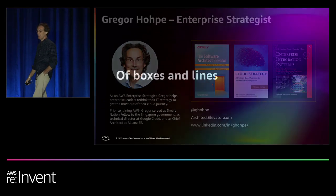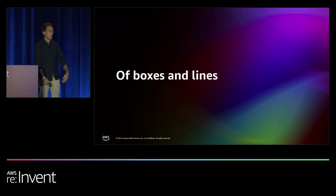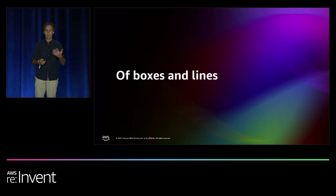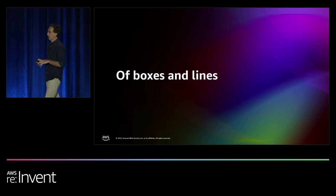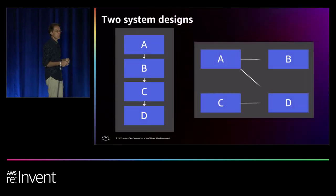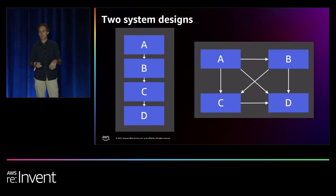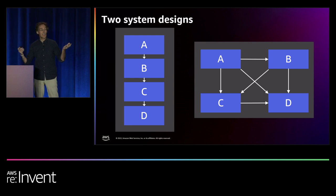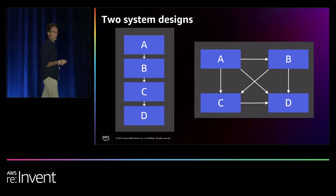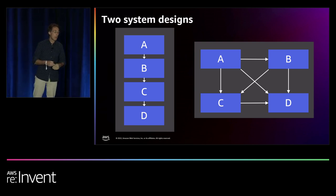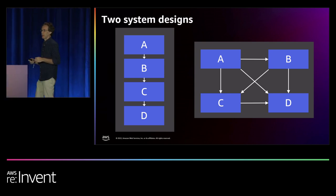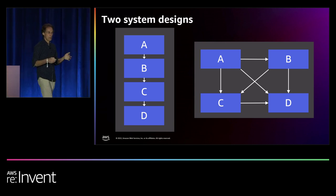I promised blue boxes, so let's look at some blue boxes and why integration — or the way we connect systems — is so important. There's a mandatory slide that all my re:Invent talks tend to have: two very simple systems consisting of blue boxes A, B, C, and D. Both systems have the same blue boxes, however they are connected differently. The rhetorical question is: do these systems have different properties?